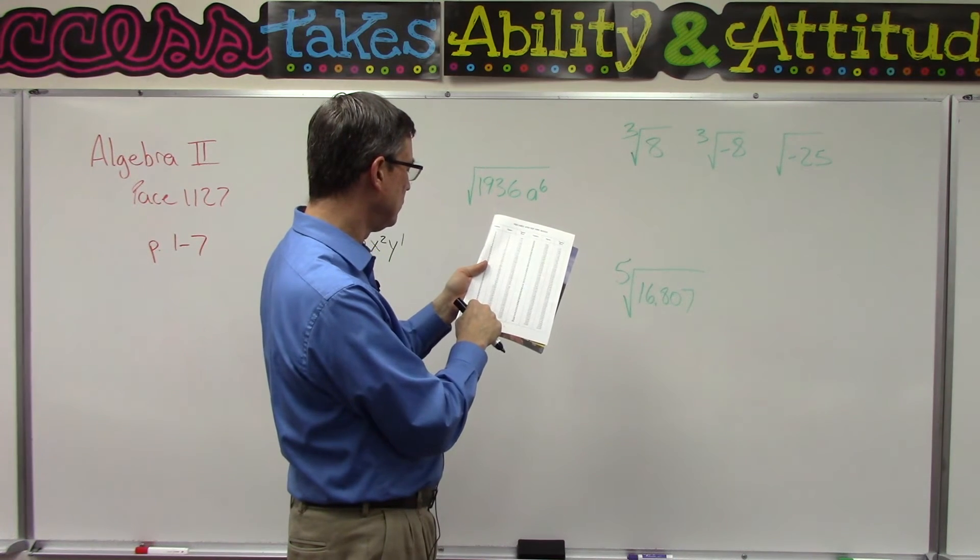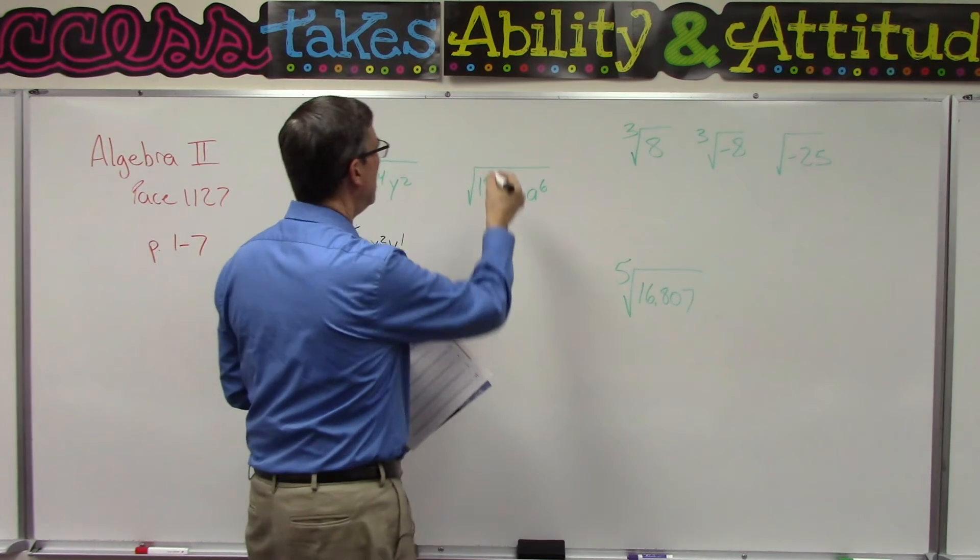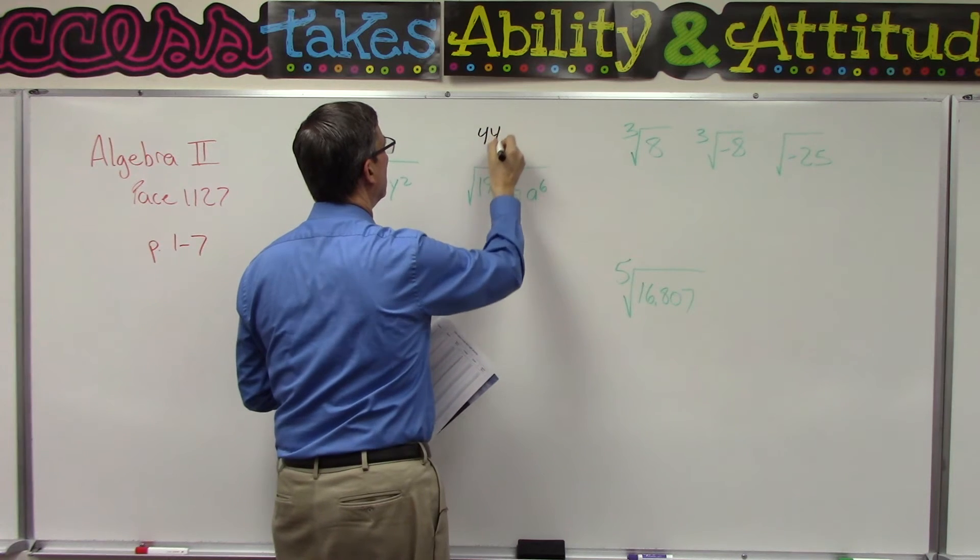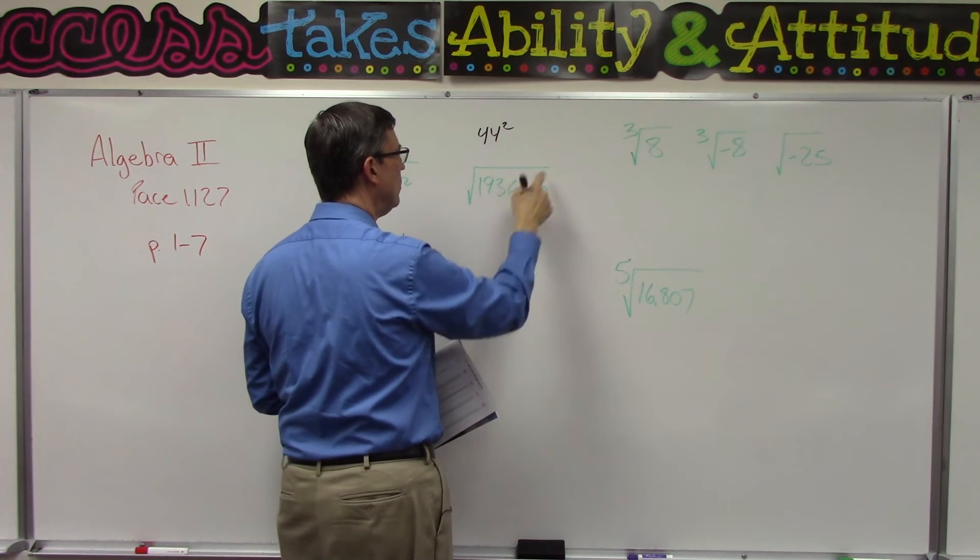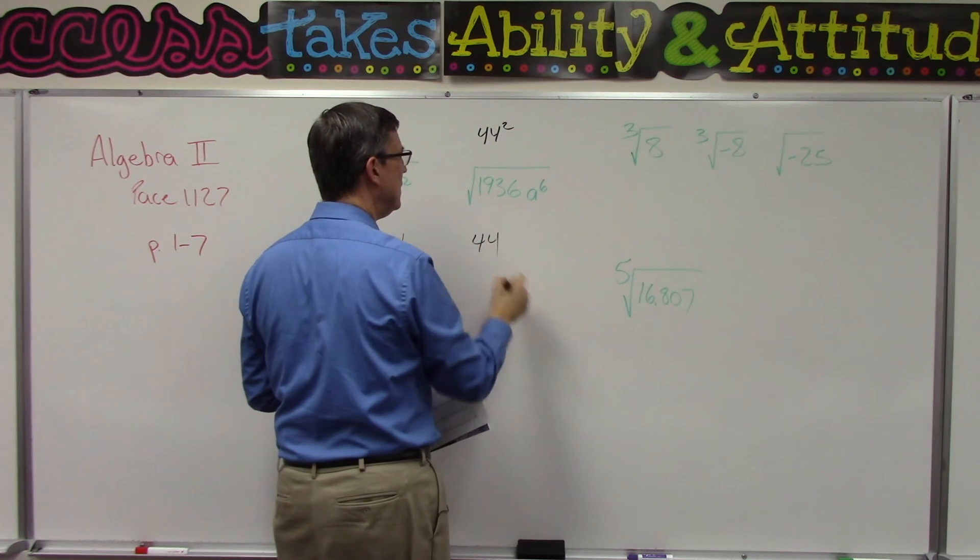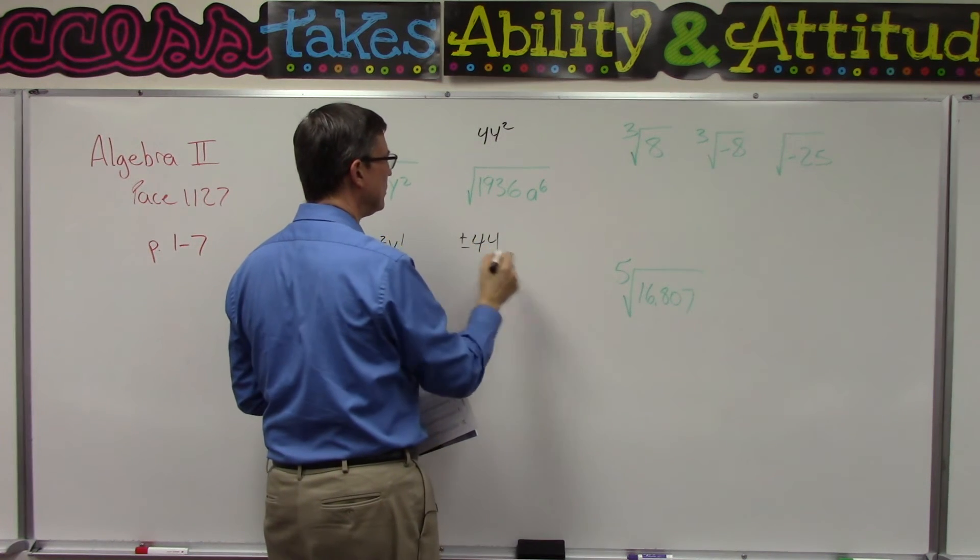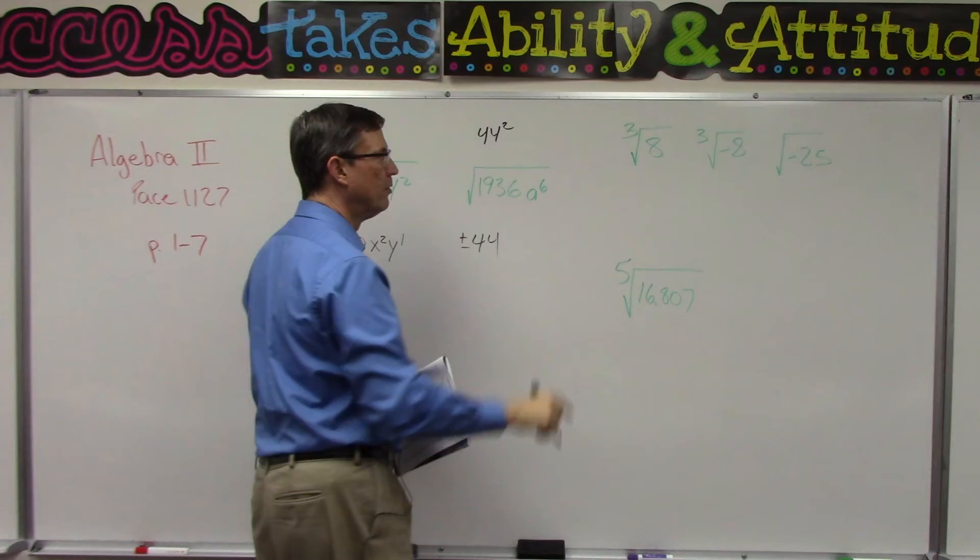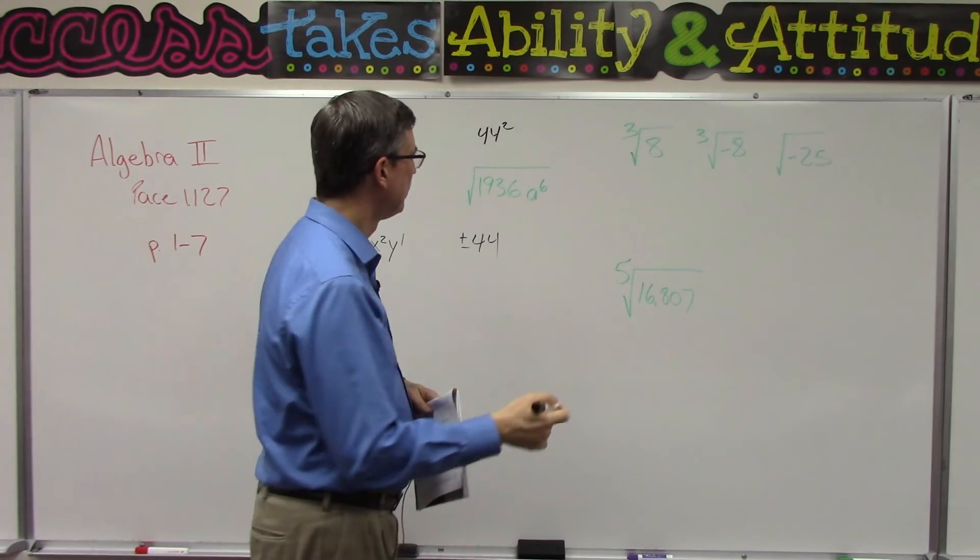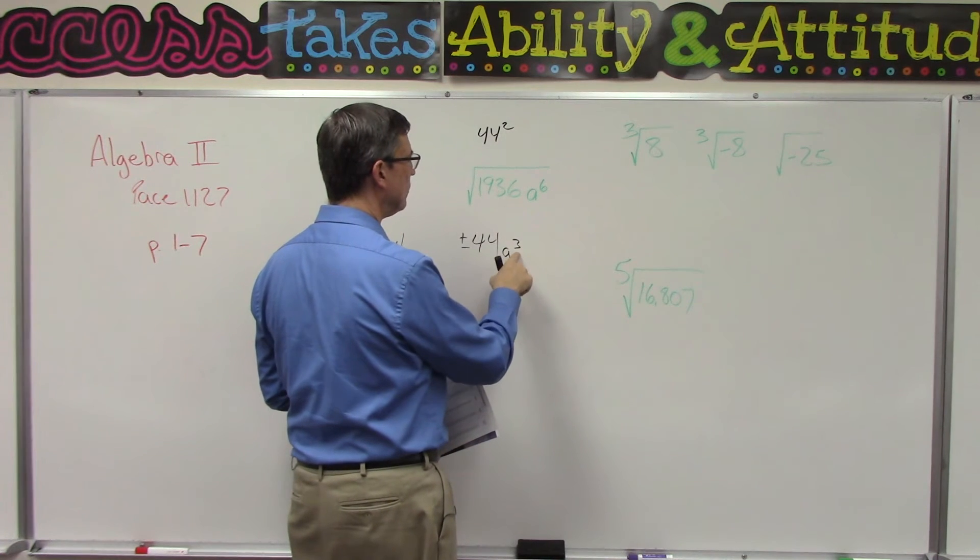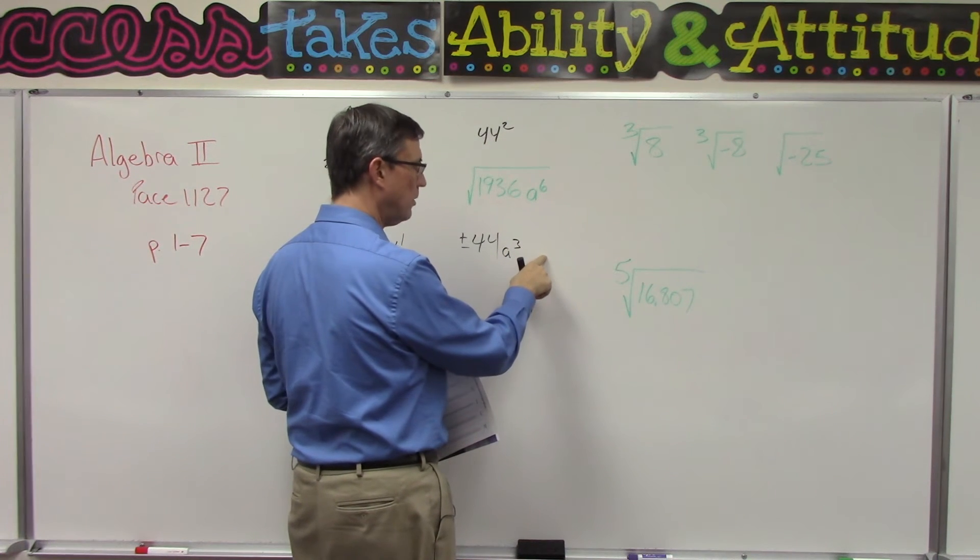So if I go over here to the left, it says that the square root of 1936 would be 44. In other words, 44 squared is 1936. So the square root of 1936 is 44. And then I should do plus or minus, and then remember the trick for the exponent is that you take half of the exponent. So a to the third, because a to the third times a to the third, we would add the exponents. That's how you get the six.